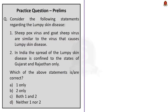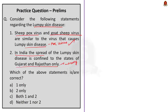Practice question 2: Consider the following statements regarding lumpy skin disease. Statement 1 says sheep pox virus and goat pox virus are similar to the virus that causes lumpy skin disease — this is correct, as sheep pox, goat pox, and lumpy skin disease are caused by strains of pox virus within the genus Capripox virus. Statement 2 says the spread of lumpy skin disease in India is confined to Gujarat and Rajasthan only — this is incorrect, as the disease also affects cattle and buffaloes in Punjab, Haryana, Himachal Pradesh, Uttarakhand, Jammu and Kashmir, and Uttar Pradesh. The answer is option A: one only.